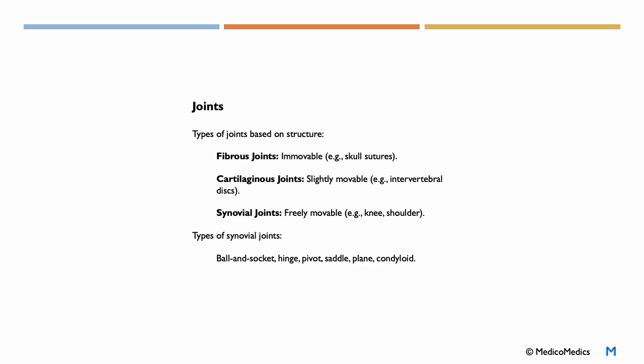Now, joints. Types of joints based on structure. We have fibrous joints—these are immovable, for example skull sutures. We have cartilaginous joints. These are slightly movable, for example intervertebral discs. And then we have synovial joints. These are freely movable, for example our knee, shoulders, etc.